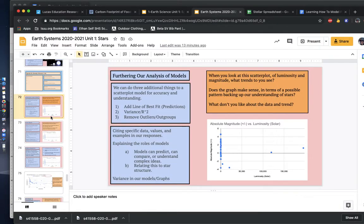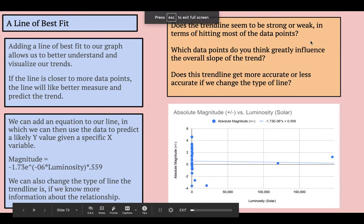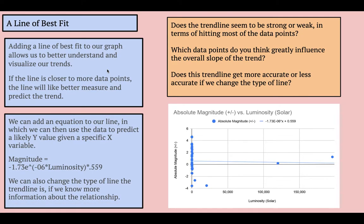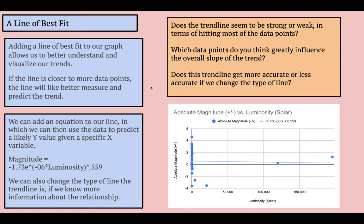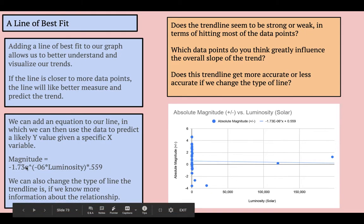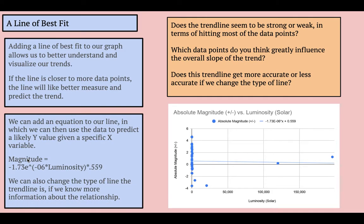So the second thing that we can talk about, or the first thing really, is a line of best fit. Now a line of best fit is really adding a trend line to your graph and it allows us to really think about does X or Y have a relationship. If so, the line should change in some capacity as we move from left to right. And it also lets us start making predictions so we can add an equation to our line.